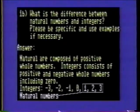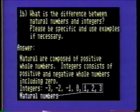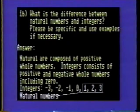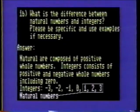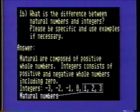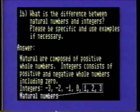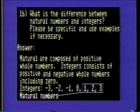Problem 1B. What is the difference between natural numbers and integers? Please be specific and use examples if necessary. Solution: Natural numbers are composed of positive whole numbers. Integers consist of positive and negative whole numbers including zero.